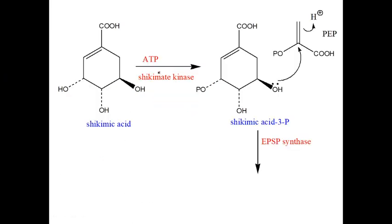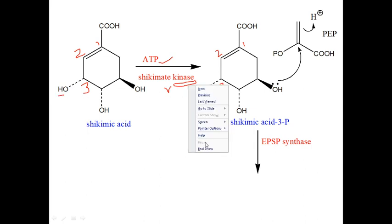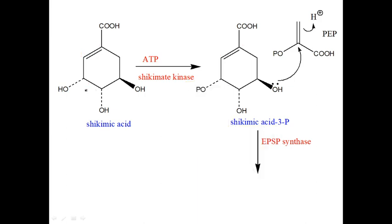From shikimic acid, in the presence of ATP and the enzyme shikimate kinase — whenever you see a kinase enzyme, a phosphate group is being added to the molecule — a phosphate group is added to the hydroxyl at position three, and the hydrogen is removed. The resulting compound is shikimic acid 3-phosphate.